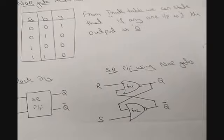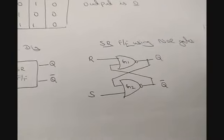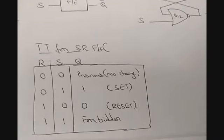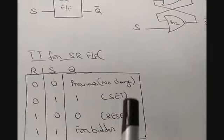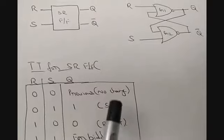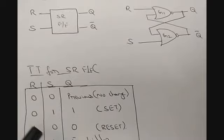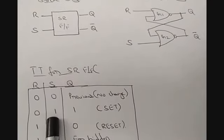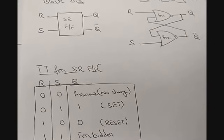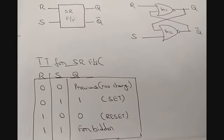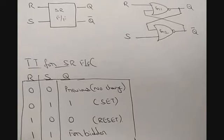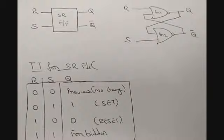Now we go through how the truth table is derived for the SR flip-flop. When inputs are zero-zero, it is the previous state — whatever value was stored previously will be retained, also called no-change. For zero-one the output is one (set), for one-zero it is zero (reset), and for one-one it is the forbidden state.